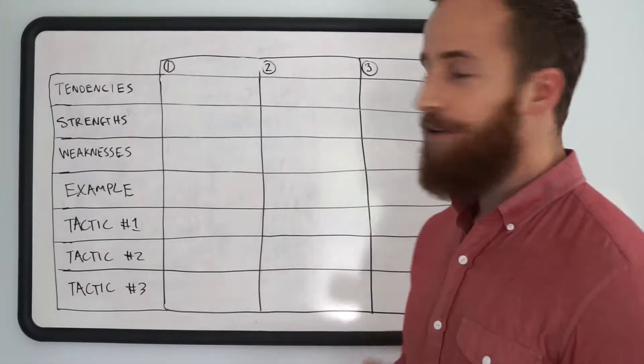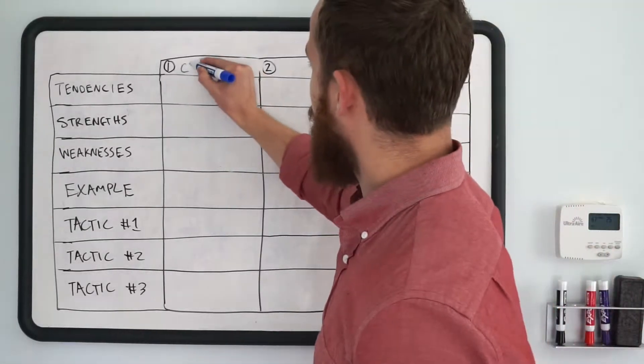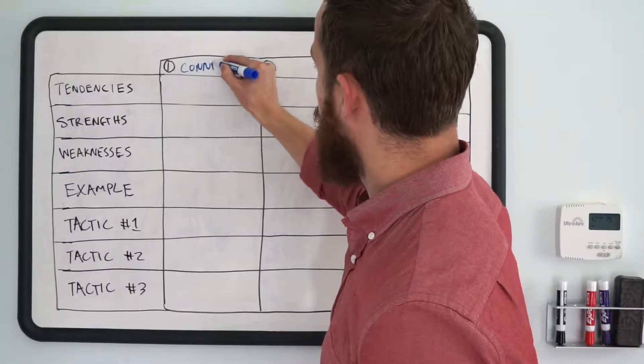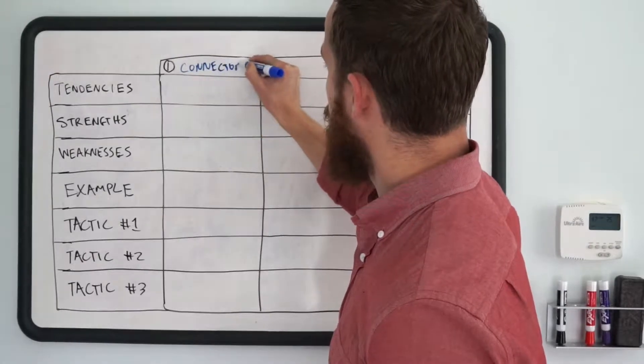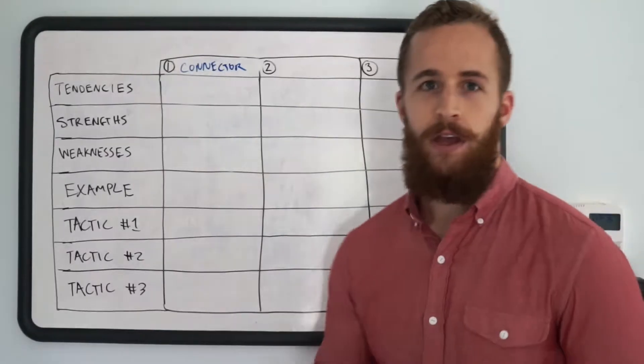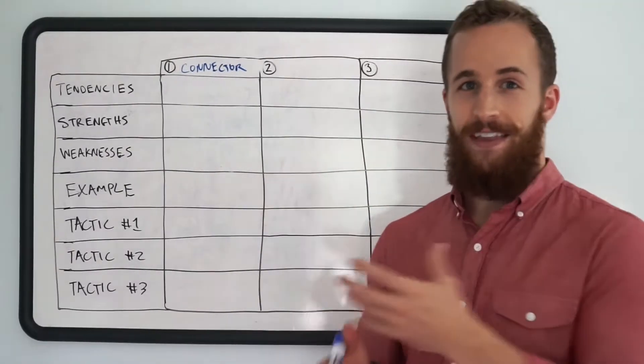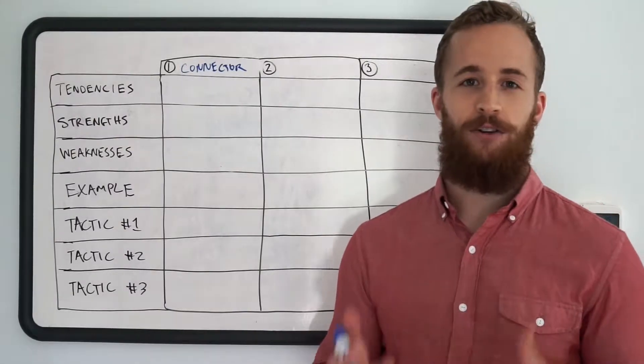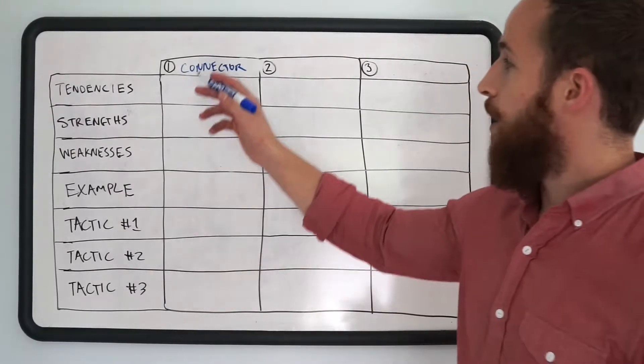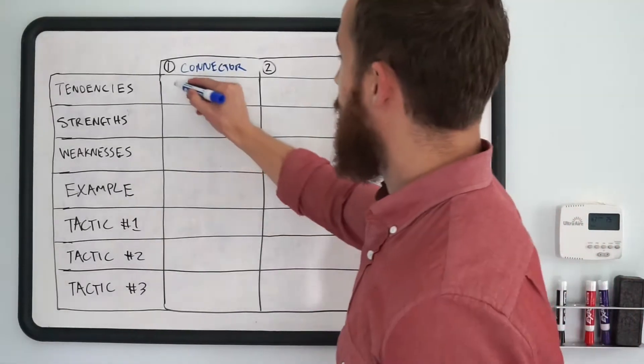So, let's dive right in. The first archetype is the connector. Alright, the connector. Now, these are people who are exactly like the archetype sounds. They are good at connecting with people, they tend to have large networks, they tend to make people feel comfortable.